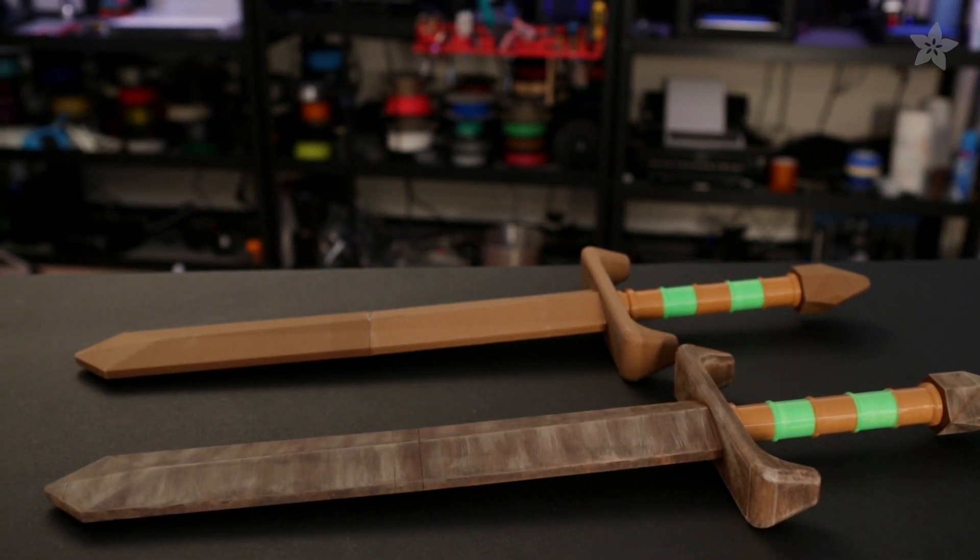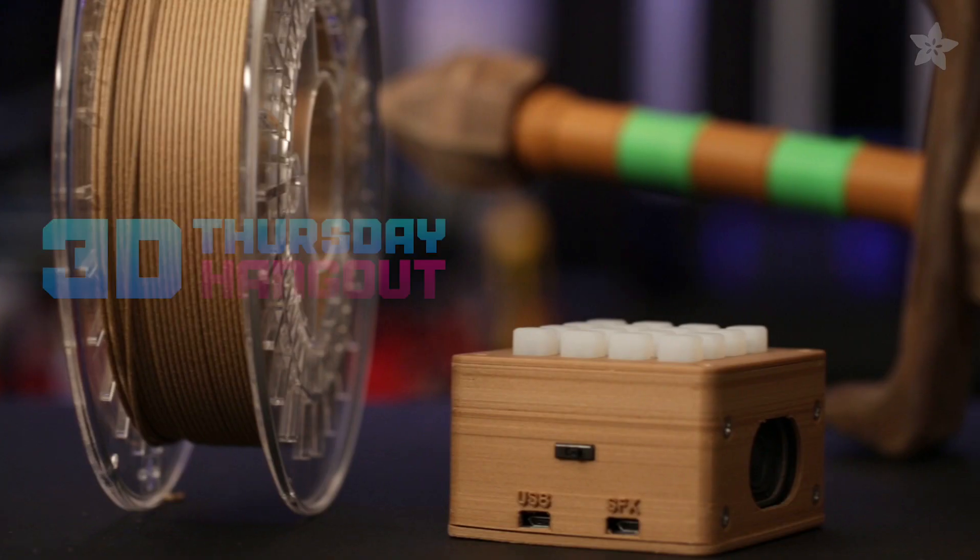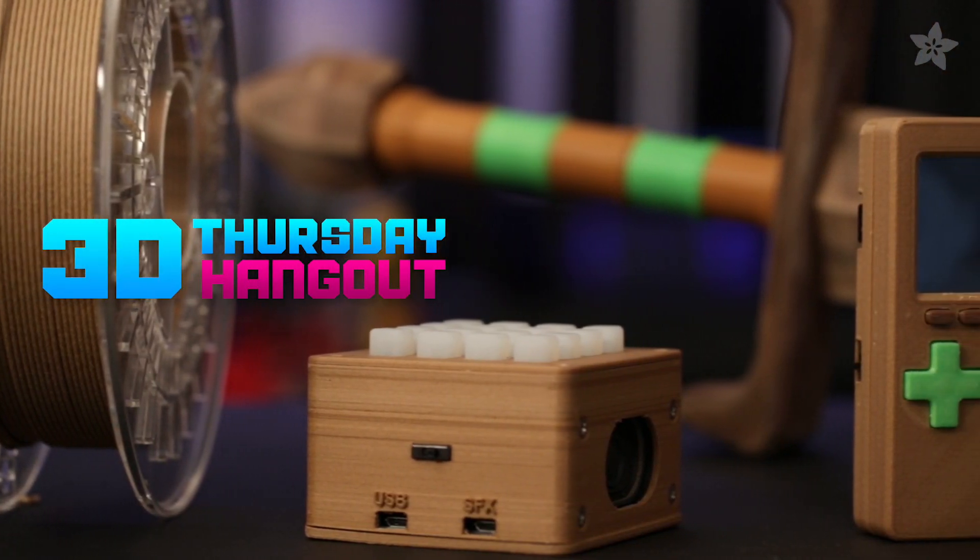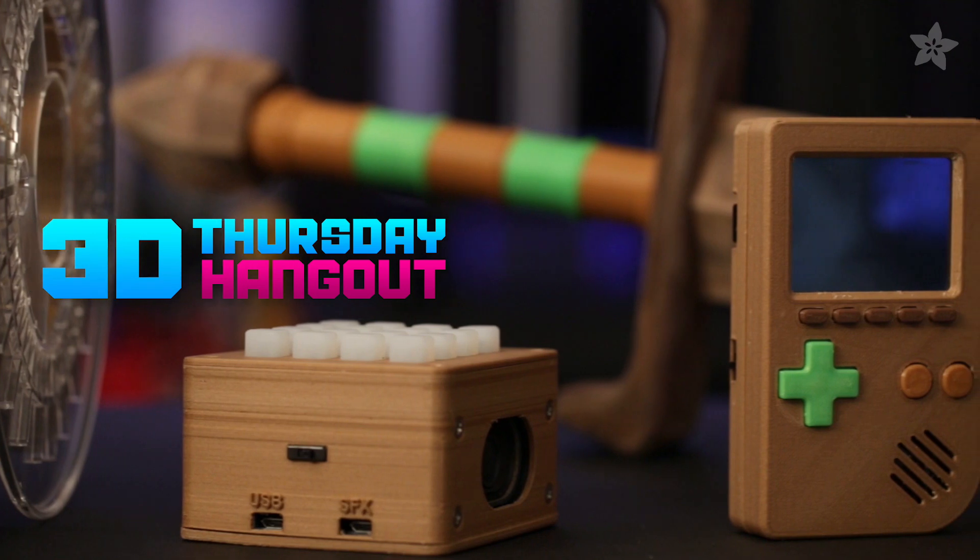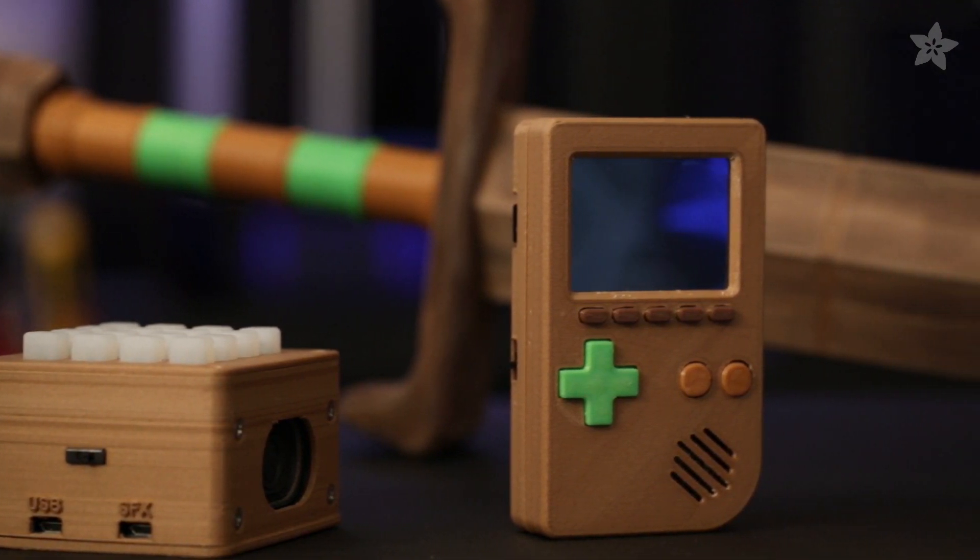And that's 3D printing with wood. You can pick up a spool of bamboo filament from the Adafruit shop. And don't forget to watch our 3D printing show every Thursday where you can get a coupon code. That's it for this episode. Don't forget to design, share, repeat.